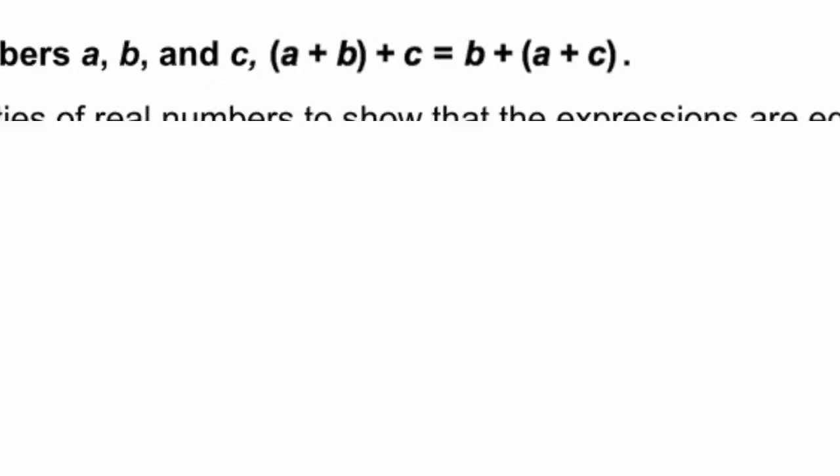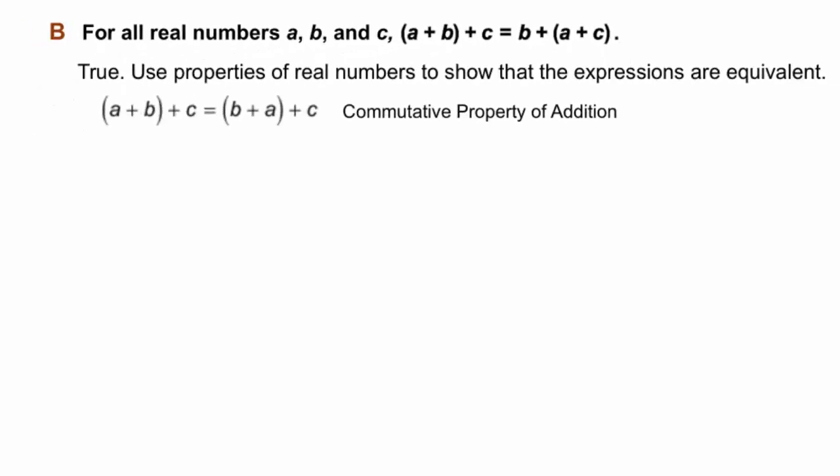So, it looks like we have two properties at work here. First, the commutative property of addition that allows us to reorder the variables. And second, the associative property of addition, which allows us to group addition or variables, group terms differently in addition problems and still get the same answer as long as it's strictly addition.